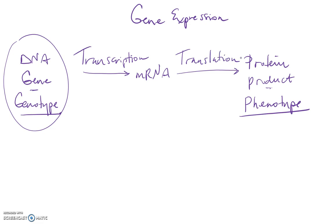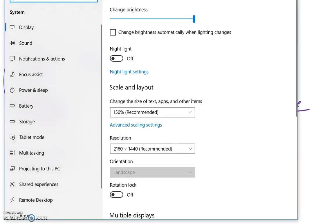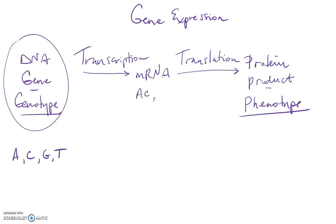Transcription is just going from a DNA language to an RNA language. We're still working with nucleotide to nucleotide. The only difference is that in DNA we have A, C, G, and T as our four bases, whereas in RNA we have A, C, G, and U. So we have one substitution — we have uracil instead of thymine. But when we go to the protein product, proteins are made of amino acids.